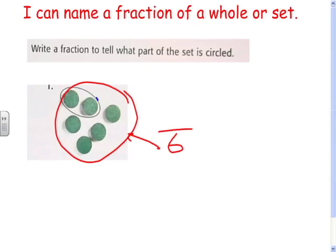What fraction? What number? How many are circled? Two. One, two. So two-sixths of this set is circled.